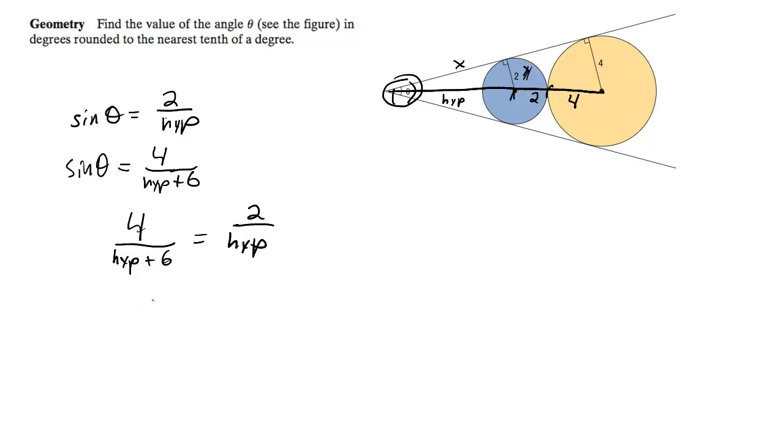Then what we're going to do is I'm going to go ahead and cross multiply these, so I got 4 hypotenuse is equal to 2 hypotenuse plus 12.